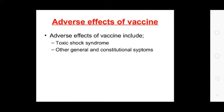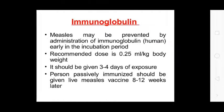Adverse side effects of vaccines include toxic shock syndrome and other general constitutional symptoms. Immunoglobulins: measles may be prevented by administration of immunoglobulin early in the incubation period. The recommended dose is 0.85 ml per kg body weight, and it should be given within three to four days of exposure. Persons passively immunized should be given live measles vaccine 8 to 12 weeks later. This completes the topic on measles disease, a viral disease. Thank you everyone.